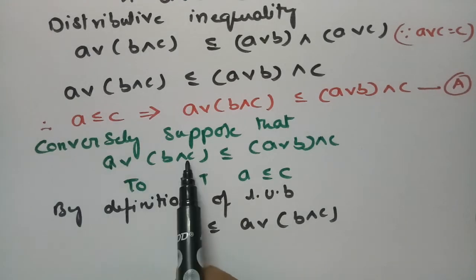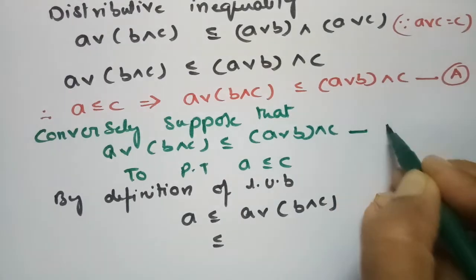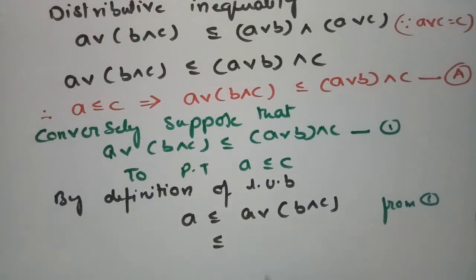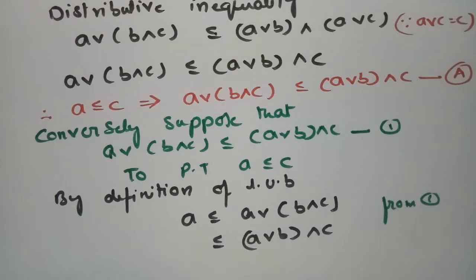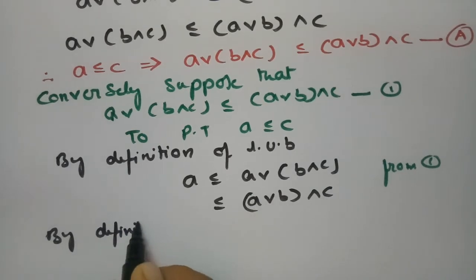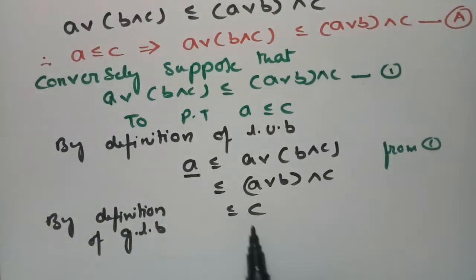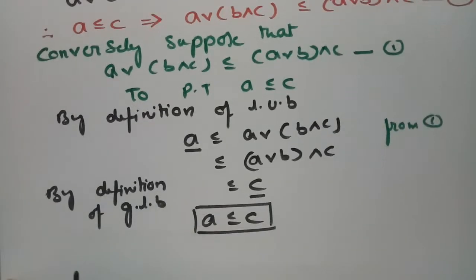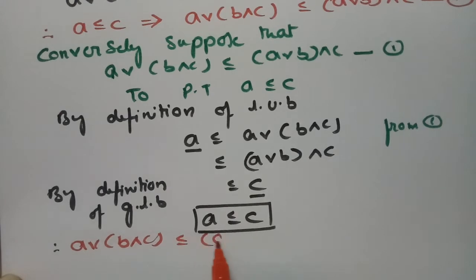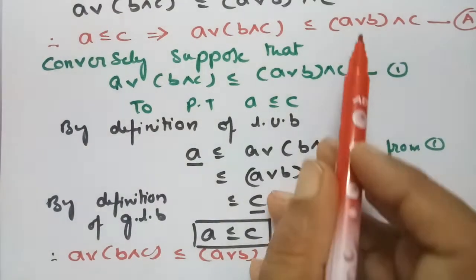Since A∨(B∧C) ≤ (A∨B)∧C, using equation 1 — instead of A∨(B∧C) I am taking (A∨B)∧C — and by the definition of greatest lower bound, this value is less than or equal to C. So we started with A and the result is A ≤ C. Therefore, assuming A∨(B∧C) ≤ (A∨B)∧C, we proved A ≤ C. This is equation number B.